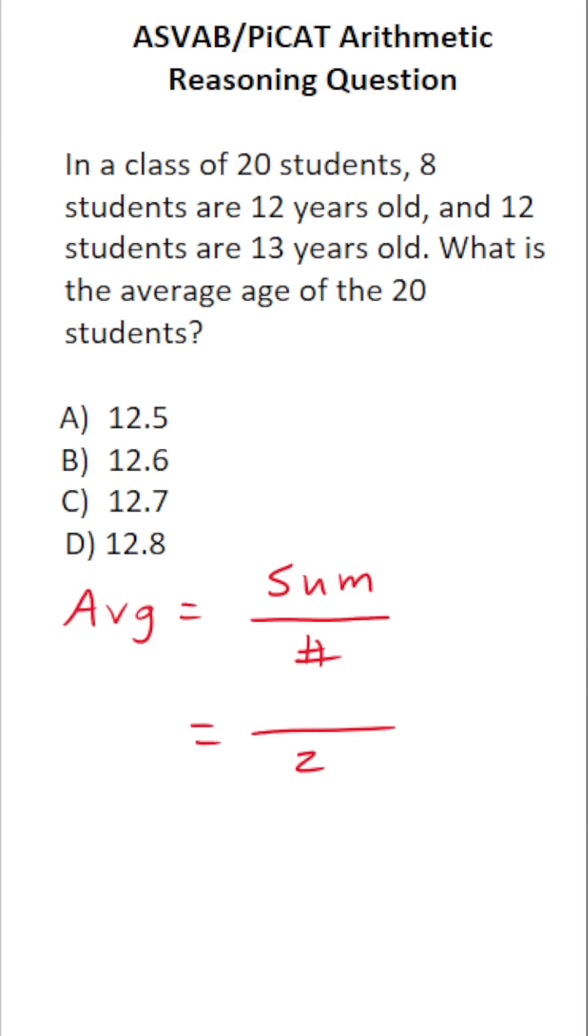In this case, we know there are 20 students in the class. That said, how are we going to sum their ages? Well, 8 students are 12, so that's going to be 8 times 12, plus 12 students are 13. That's going to be 12 times 13.